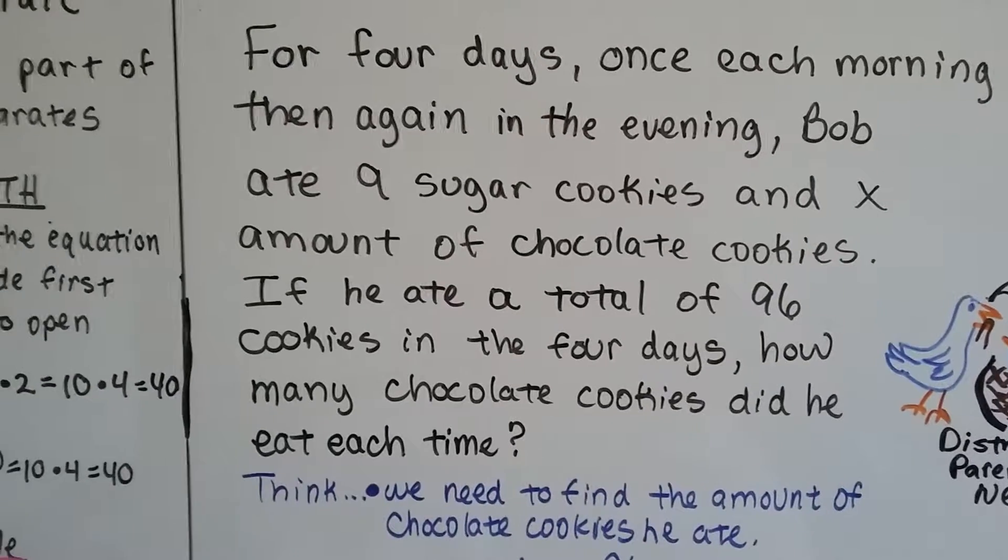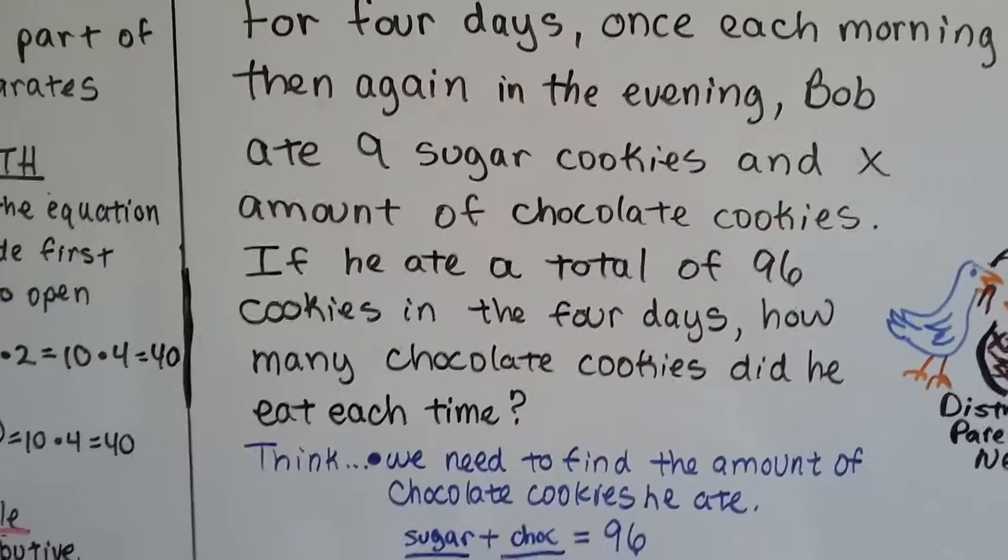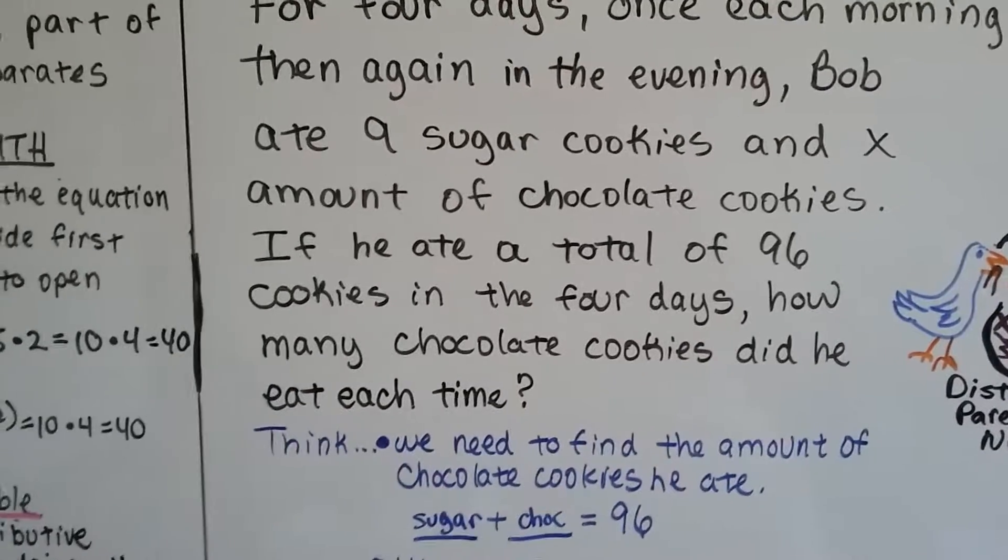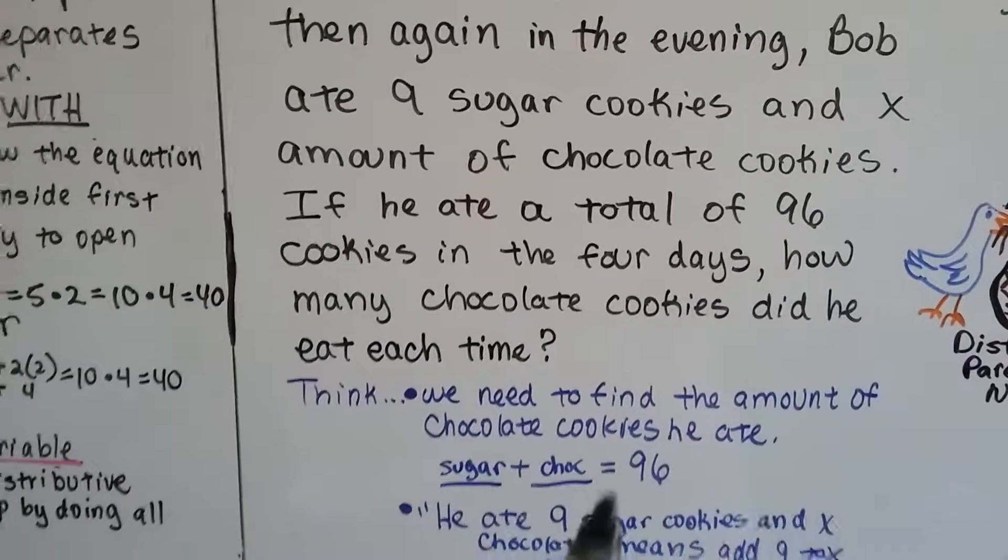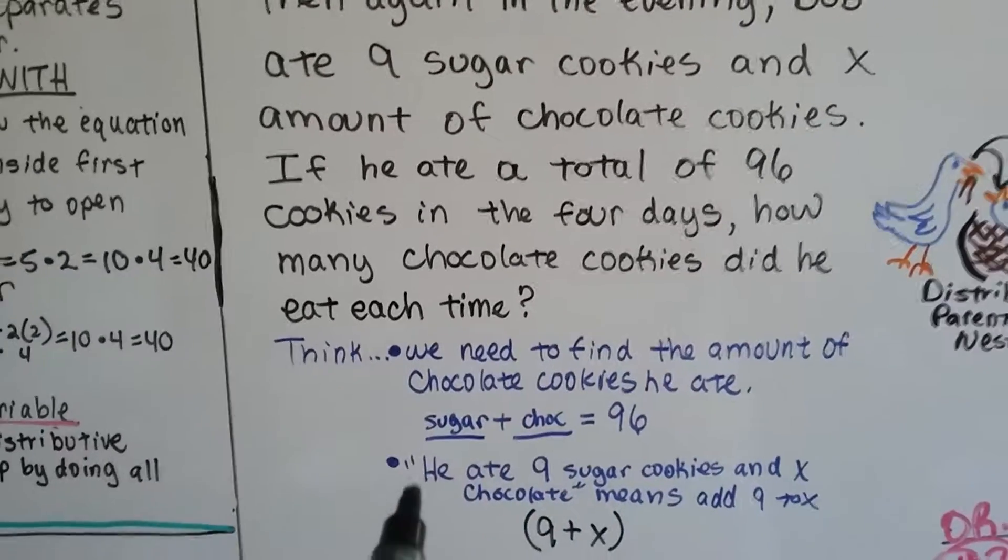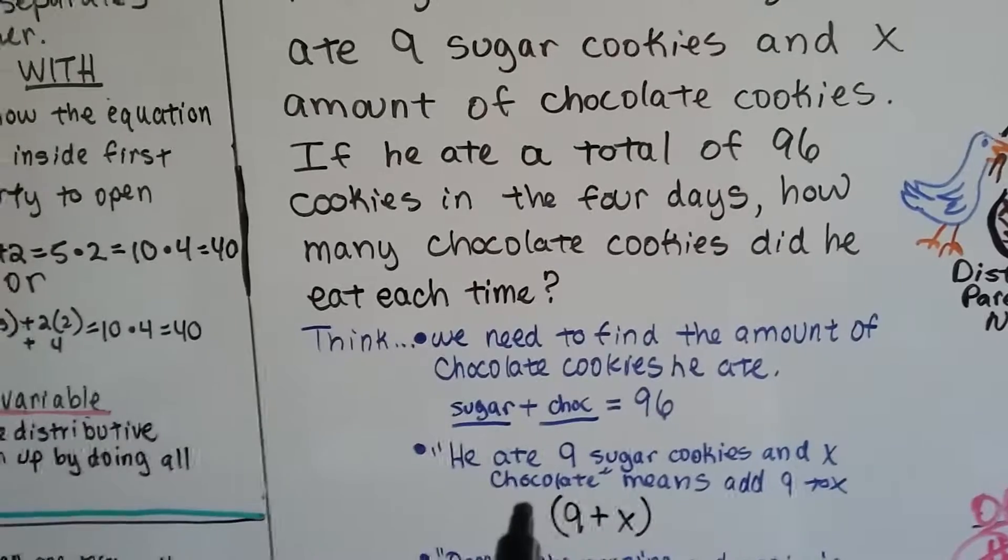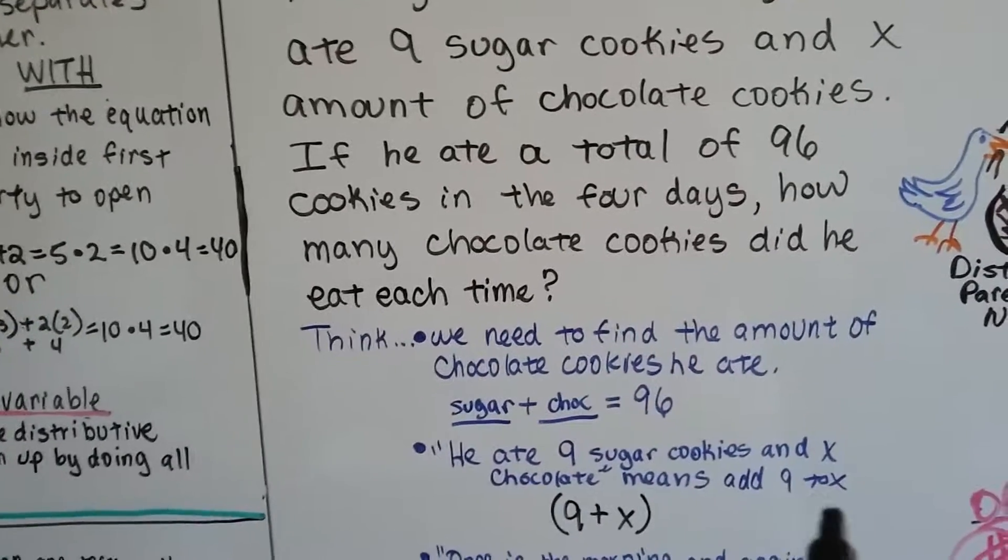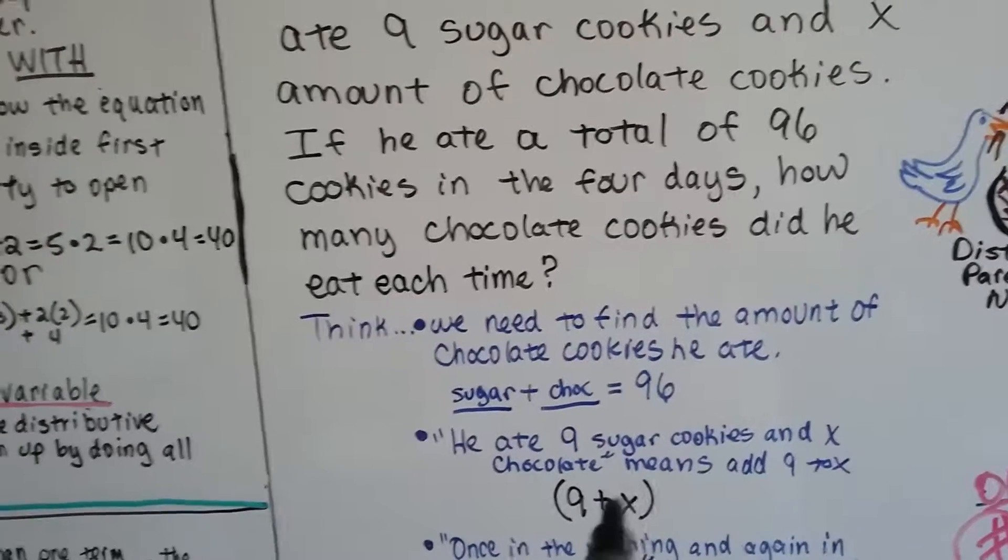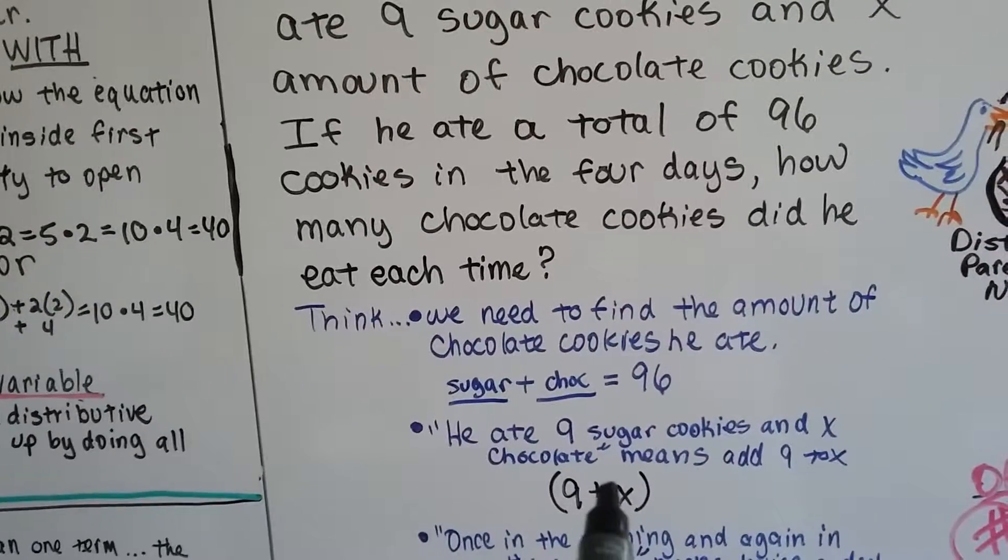We need to find the amount of chocolate cookies he ate each time. So if he ate sugar cookies and chocolate cookies, sugar plus chocolate is going to equal 96. He ate 9 sugar cookies and X chocolate means to add the 9 to the X. He ate the 9 sugar cookies plus the chocolate cookies at each sitting.